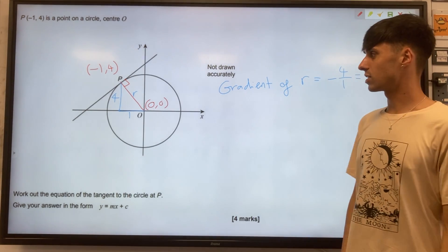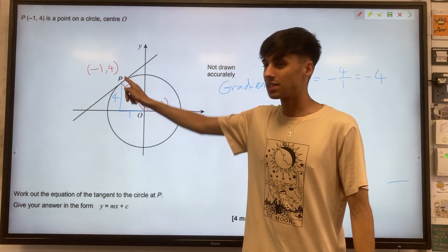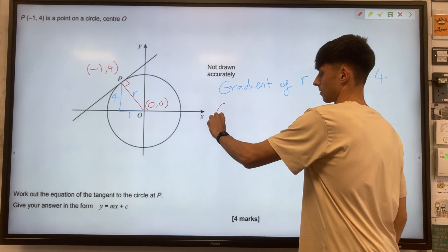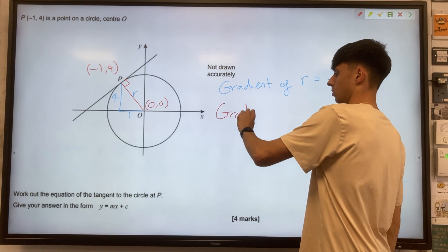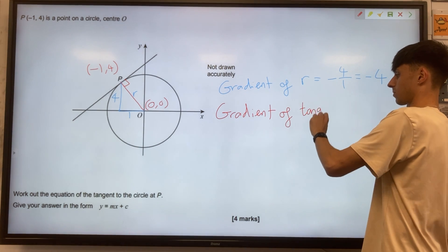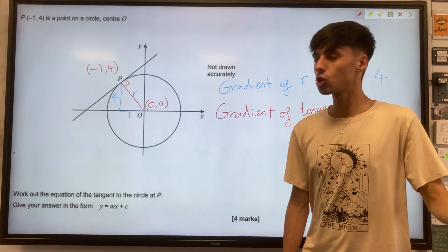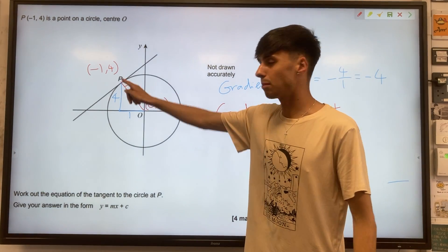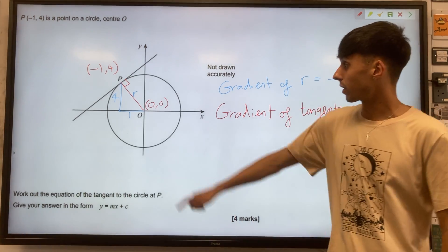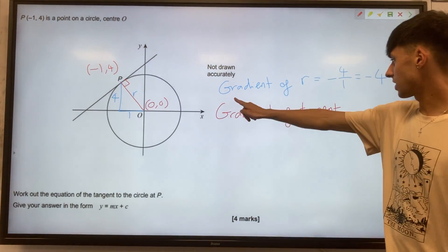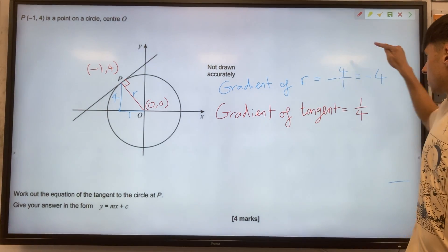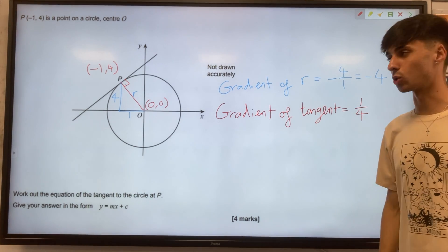Next idea we need to use is radius meeting tangent at 90 degrees, and thinking about gradients involved in this. So gradient of tangents - these two are perpendicular. That means their gradients are negative reciprocals of one another. So having said that these are perpendicular, the gradient of the tangent must be one quarter, because minus 4 is the negative reciprocal of one quarter.